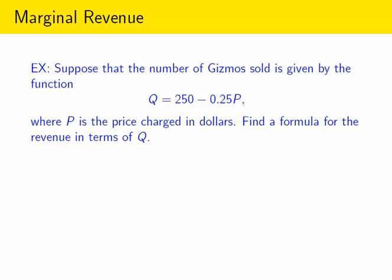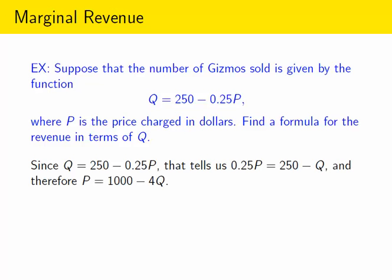So what would the formula for the revenue be in terms of the quantity sold? Well, I can write the revenue in terms of Q and P. What I'd like to do is write P in terms of Q. We can do that. If Q is given by 250 minus 0.25P, all we have to do is rearrange the equation to isolate P. So I can write P in terms of Q, and then I can write R in terms of just Q by replacing P with the formula we just found. Then you can simplify this formula. So in this case we would see that the revenue is 1000Q minus 4Q squared.